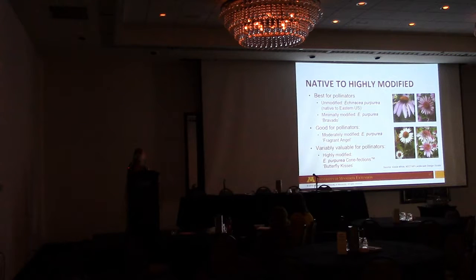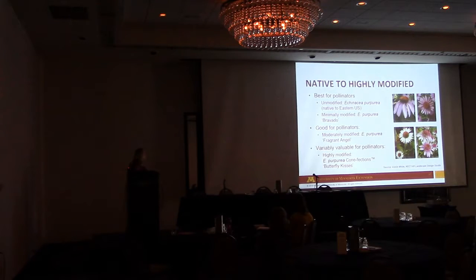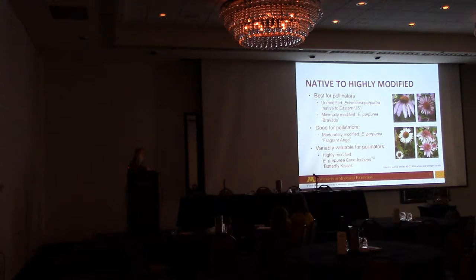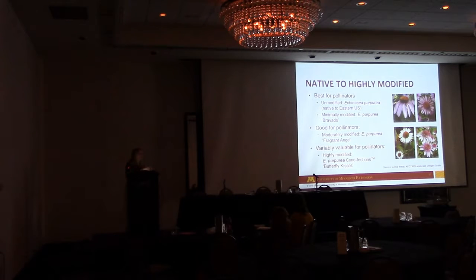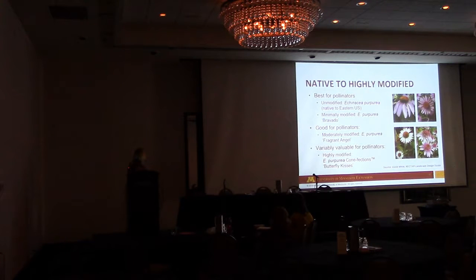This gives people a way to look at pictures and say 'I see where they're similar.' The moderately modified example is 'Fragrant Angel,' the white coneflower, and then we want to avoid the highly modified plants. People can take this to the garden center and say: 'I want a plant that looks like this but with slightly bigger flowers — is this similar to the native plant?' There are good ways to do this with lots of visual content, and that's what we did with this survey as well.